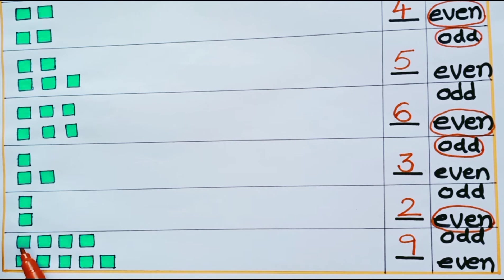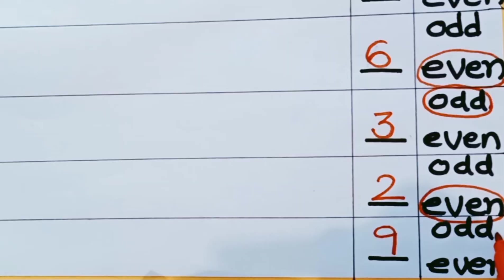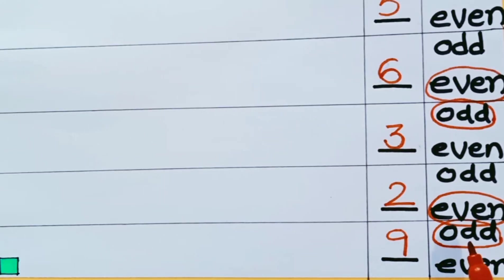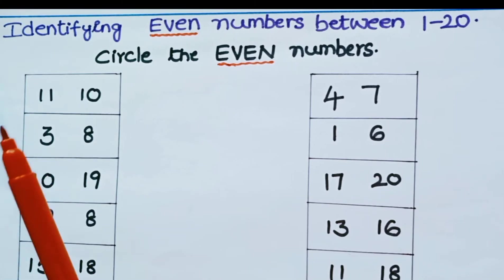How many pairs are there? 1 pair, 2 pairs, 3 pairs, 4 pairs, and 1 unpaired block. So when there is an unpaired block present the number is an odd number. Let us circle odd. So 9 is an odd number.